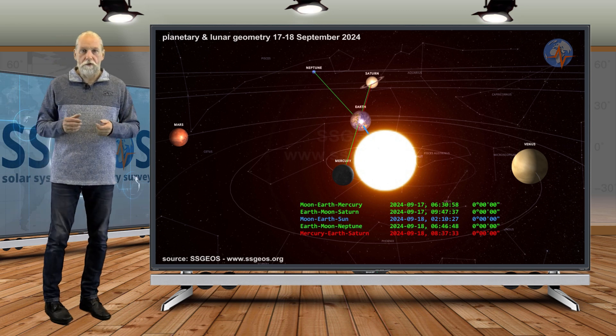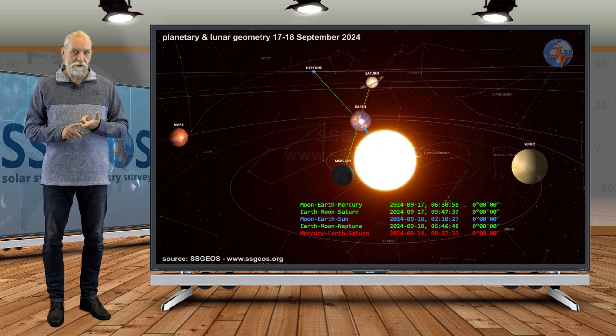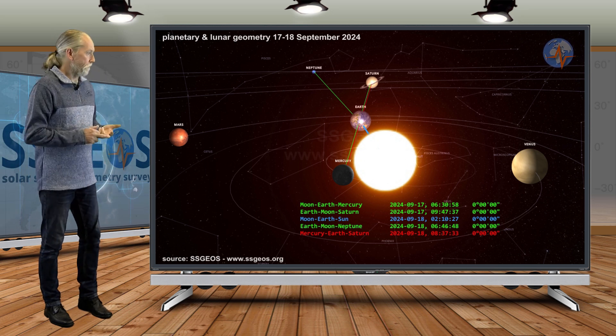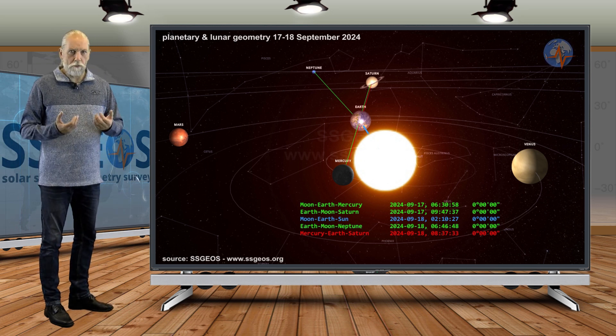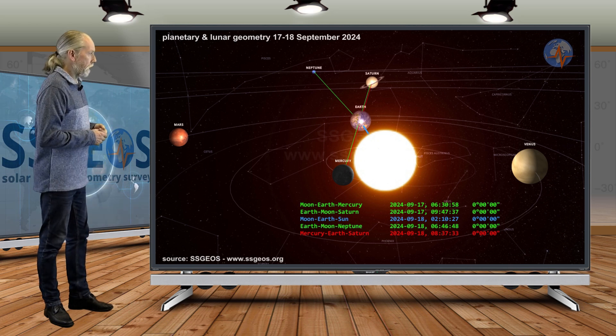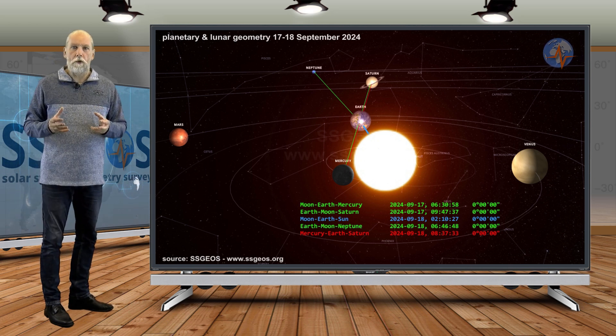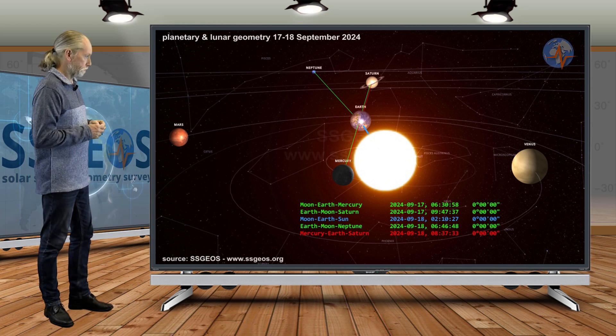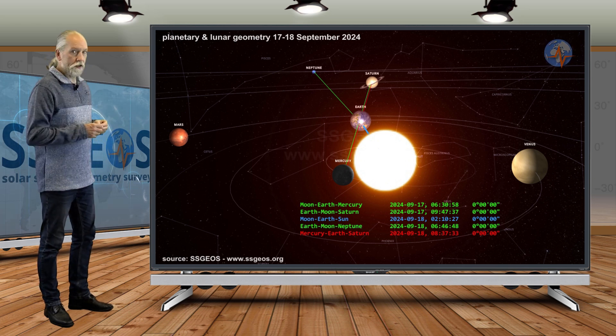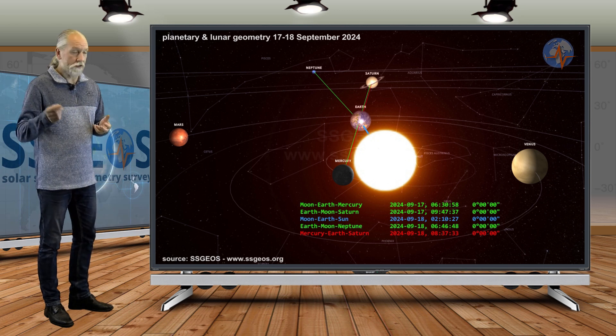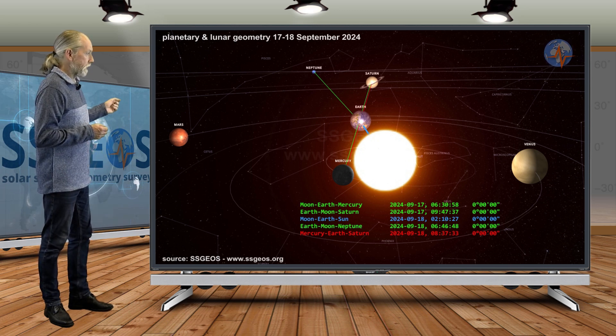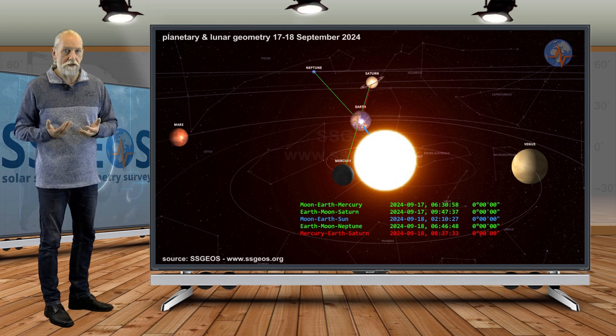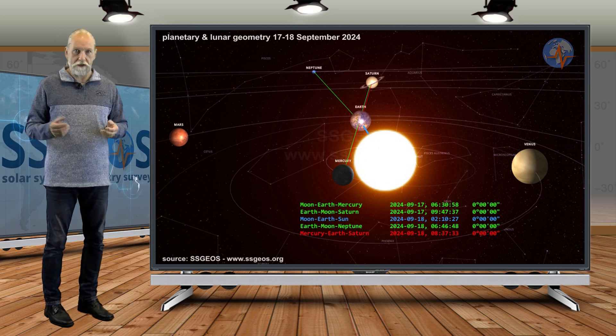So tomorrow morning we have a full moon with the moon lining up with Neptune and also the planetary conjunction with Mercury, Earth, and Saturn. It is not all lining up perfectly, so we have the full moon but at that point the Earth is not yet between the Sun and Neptune. That will be about three days later. And we see the moon first lining up with Mercury and Saturn, and only 24 hours later we see that the Earth will be between Mercury and Saturn.